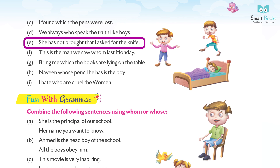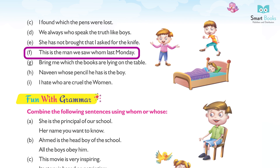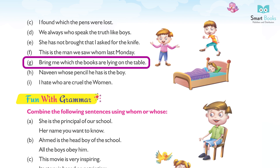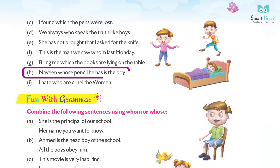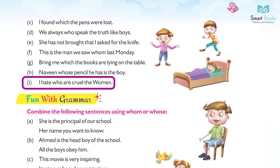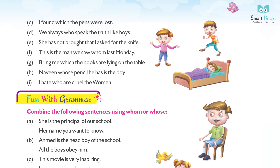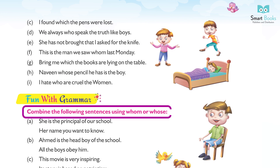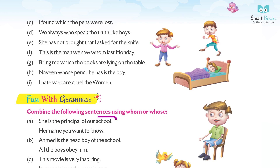(f) This is the man we saw whom last Monday. Answer: This is the man whom we saw last Monday. (g) Bring me which the books are lying on the table. Answer: Bring me the books that are lying on the table. (h) Naveen, whose pencil he has, is the boy. Answer: Naveen is the boy whose pencil he has. (i) I hate who are cruel the woman. Answer: I hate women who are cruel.